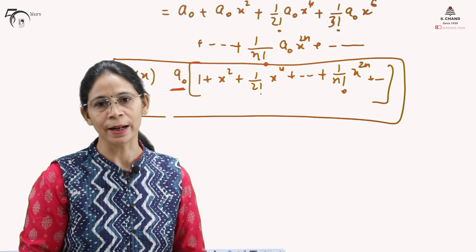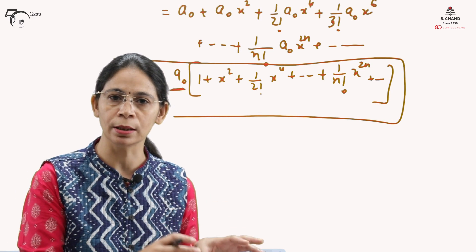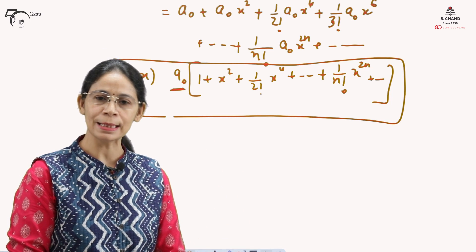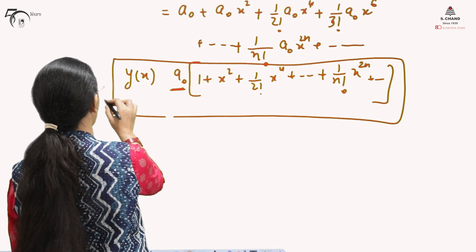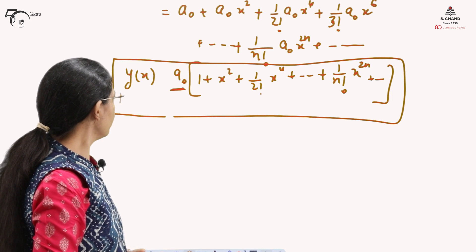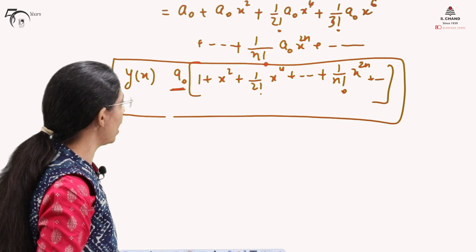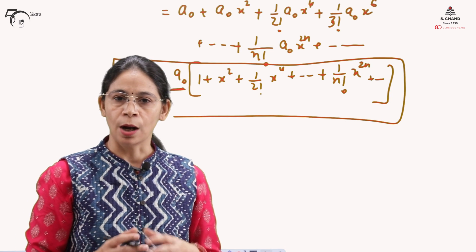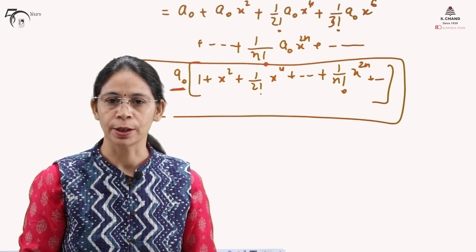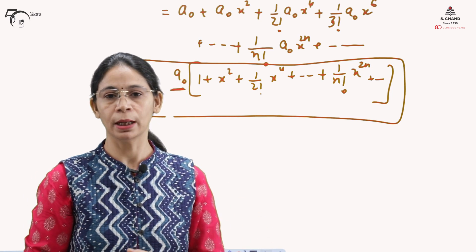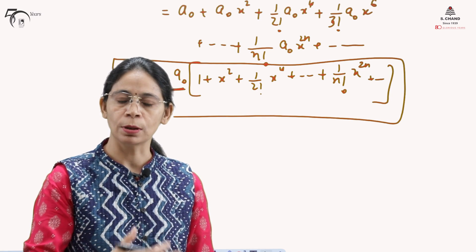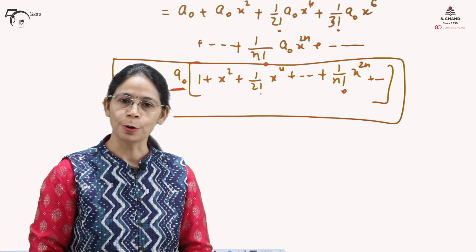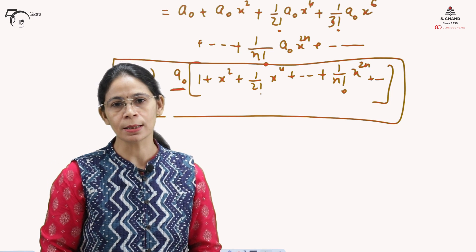After obtaining the recurrence relation we found the values of all the constants, which were then substituted into the assumed series solution. The final solution is y(x) = a₀[1 + x² + (1/2!)x⁴ + ...]. If we could not write down the recurrence relation, we would not be able to write the nth term, because otherwise we would need to equate the coefficient of xⁿ individually each time.